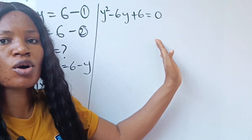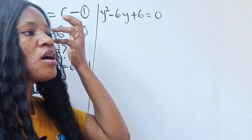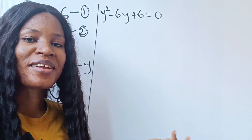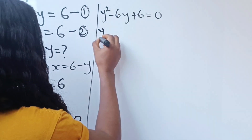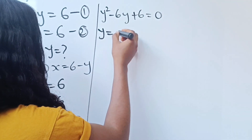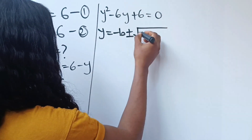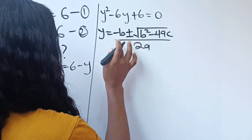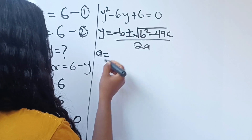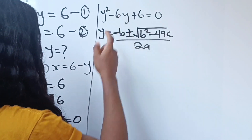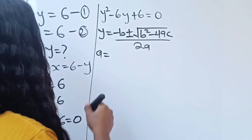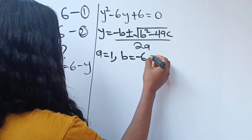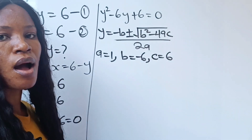Now let's go ahead and solve this. We can't solve by factorization, so let's use the quadratic formula, also known as the almighty formula. This formula states that y equals minus b plus or minus square root of b squared minus 4ac, divided by 2a. Our a is the coefficient of y squared, which is 1. Our b is the coefficient of y, which is minus 6. And our c is the constant, which is plus 6.